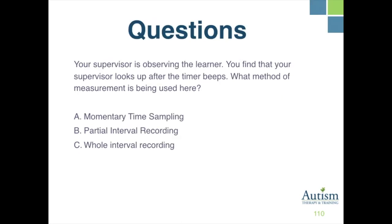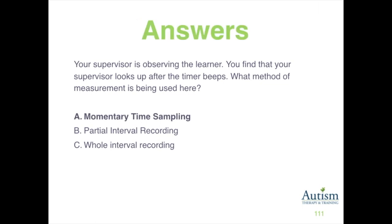Your supervisor is observing the learner and you find that your supervisor looks up after the timer beeps. What method of measurement is being used? A, momentary time sampling; B, partial interval recording; or C, whole interval recording? The correct response is A, momentary time sampling.